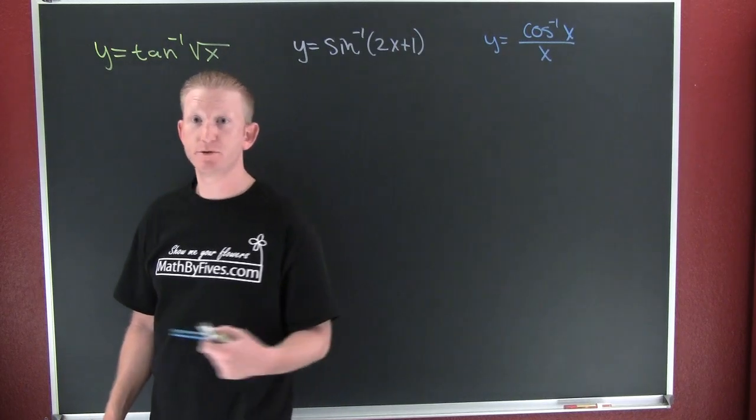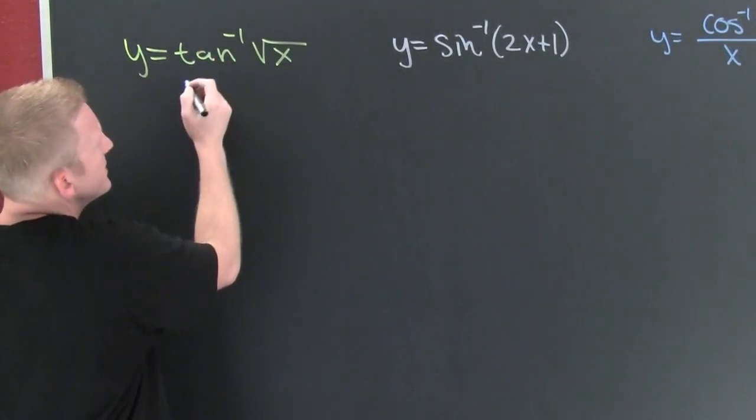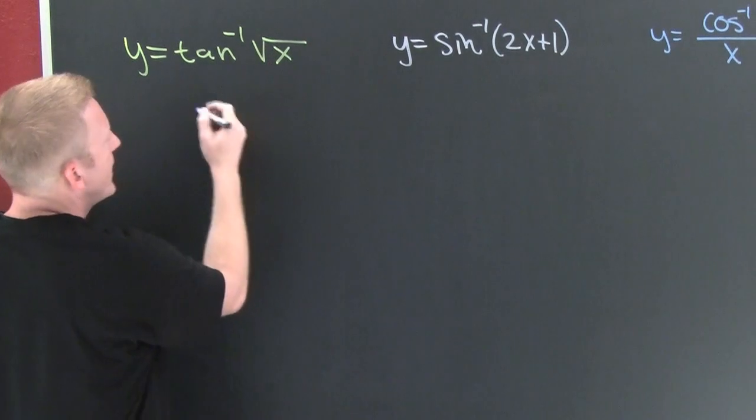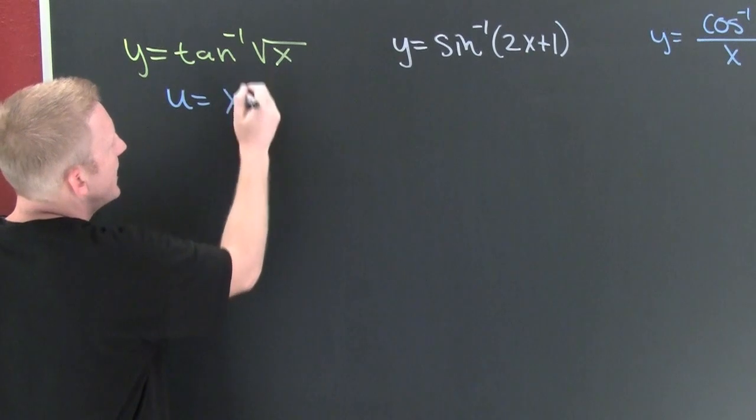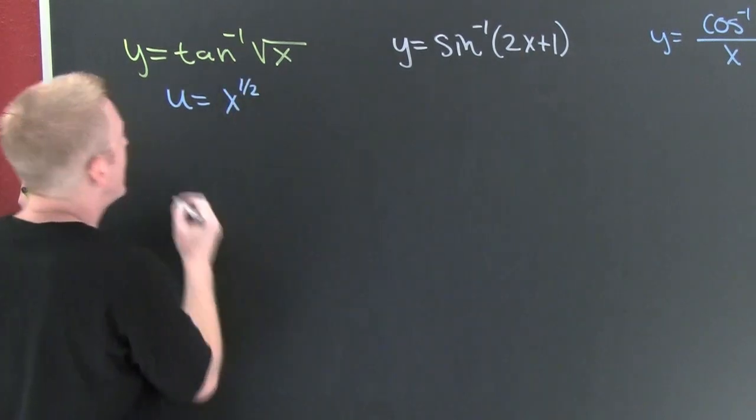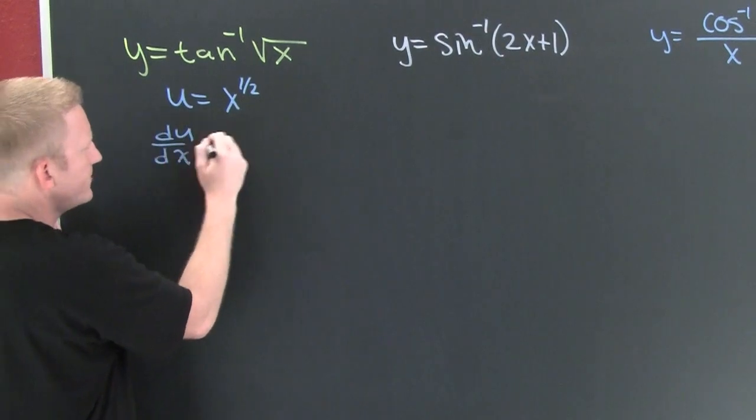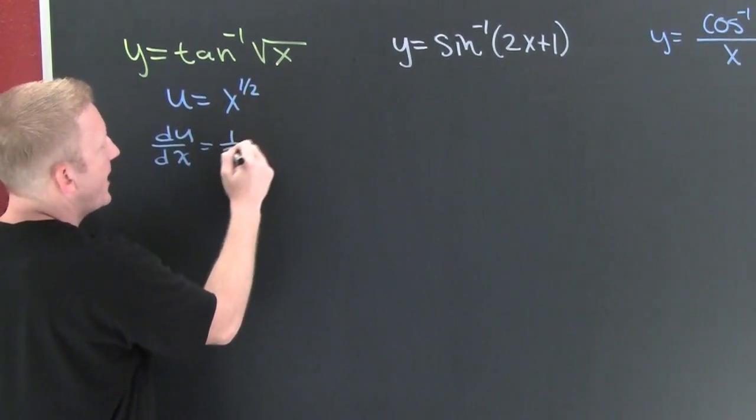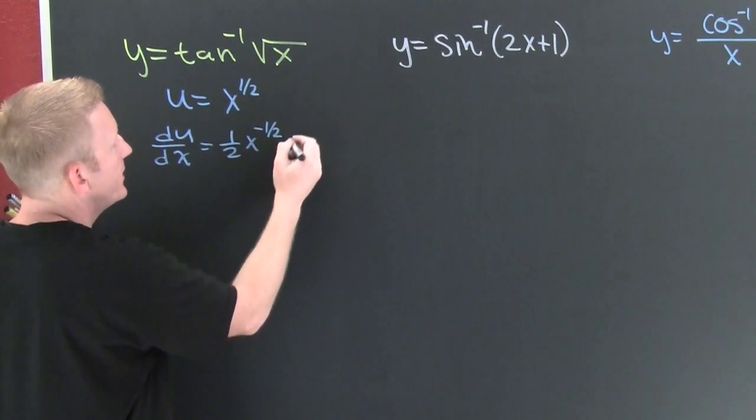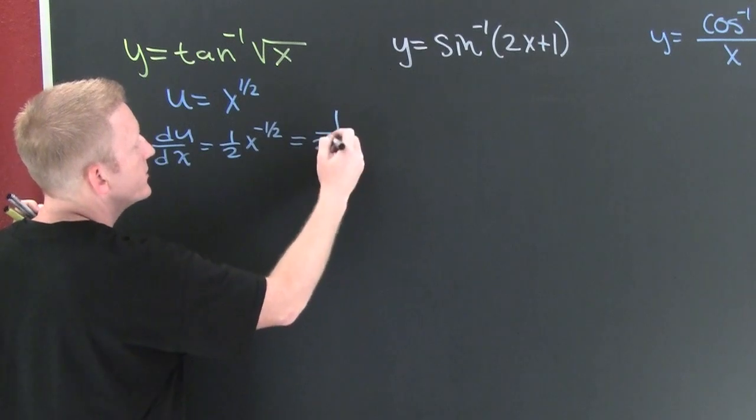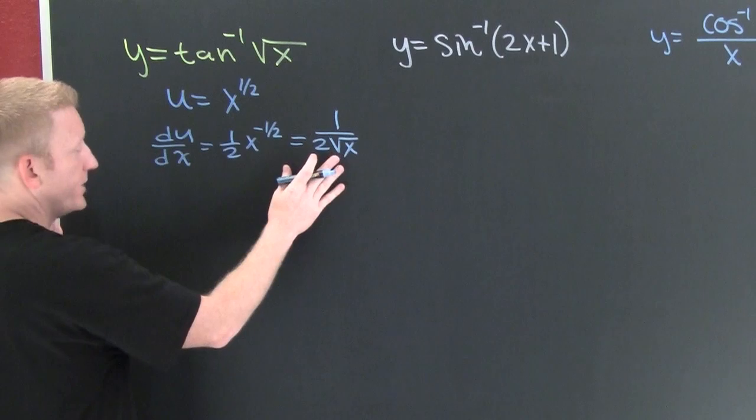We want to take the derivative of the inverse tangent of the square root of x. So here we're gonna let u equal, wait for it, this x to the one half. Yes, so then du/dx is gonna be wait for it, one half x to the minus one half. Yeah, which is gonna be one over two root x. Yeah, we're proficient in our algebra, so this little bit is no problem.